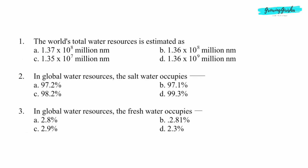Question 1. The world's total water resources is estimated as. Option A: 1.37 into 10 raised to the power 8 million nanometer.